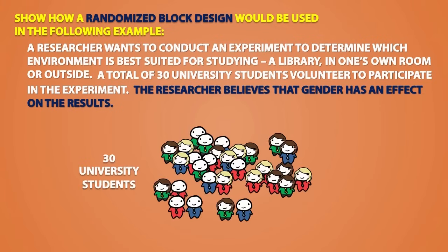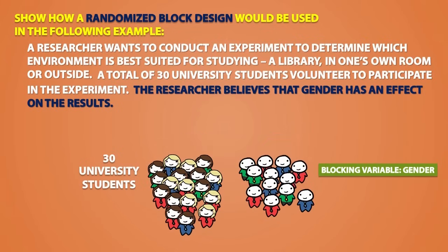In this example, gender would be the blocking variable. So first, we separate our experimental units based on gender. One block will be for females, and one block will be for males. There are 18 females and 12 males. Then, the experimental units in each block will be randomly assigned to three different groups to receive a treatment.